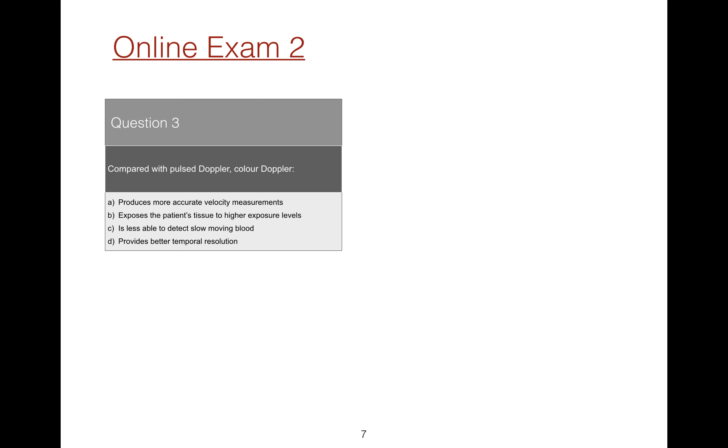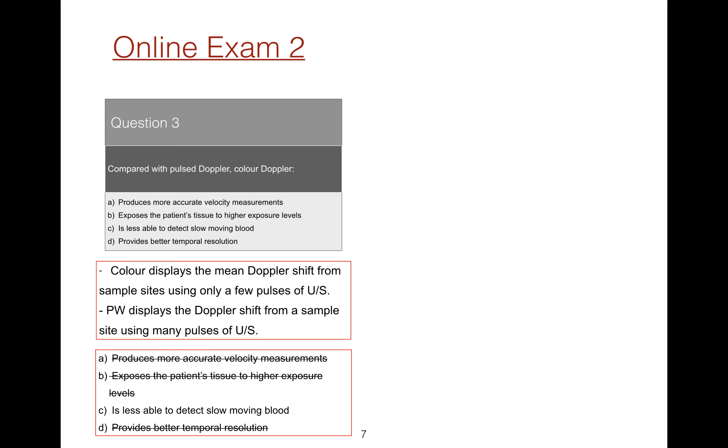Question 3 asks for a contrast between KALA and Pulse Wave Doppler. KALA Doppler displays the mean Doppler shift from sample sites using only a few pulses of ultrasound per site. In contrast, Pulse Wave Doppler displays the Doppler shift from a single sample site using many pulses of ultrasound. So KALA Doppler is less able to detect slow moving blood.